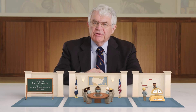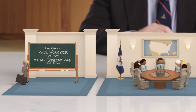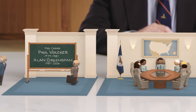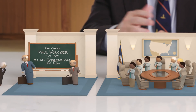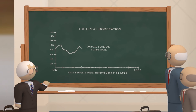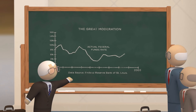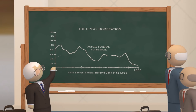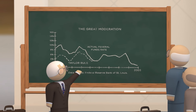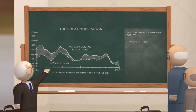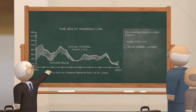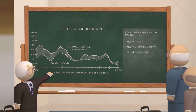The situation was resolved in the 1980s with the adoption of sound monetary policy by Federal Reserve Chairs Paul Volcker and Alan Greenspan. The period from 1983 to 2003, when the federal funds rate closely followed the Taylor Rule, is often called the Great Moderation. It was marked by low inflation, low unemployment, mild recessions, and robust economic growth.